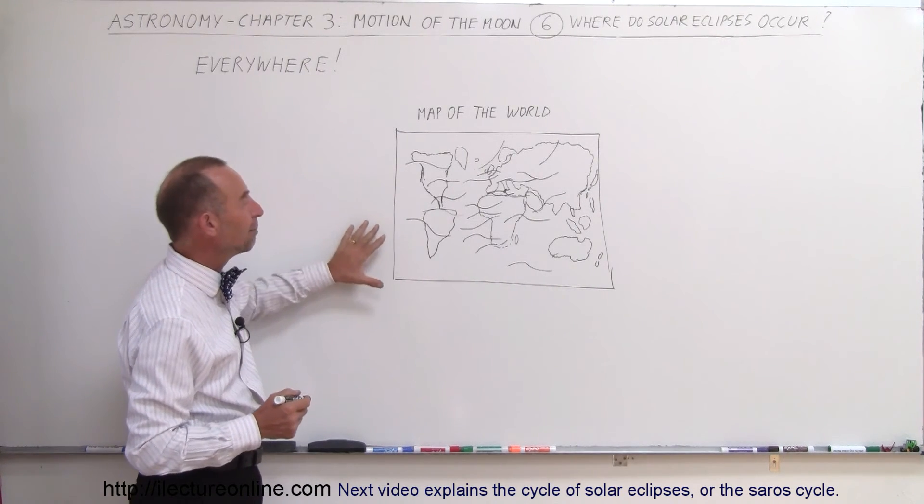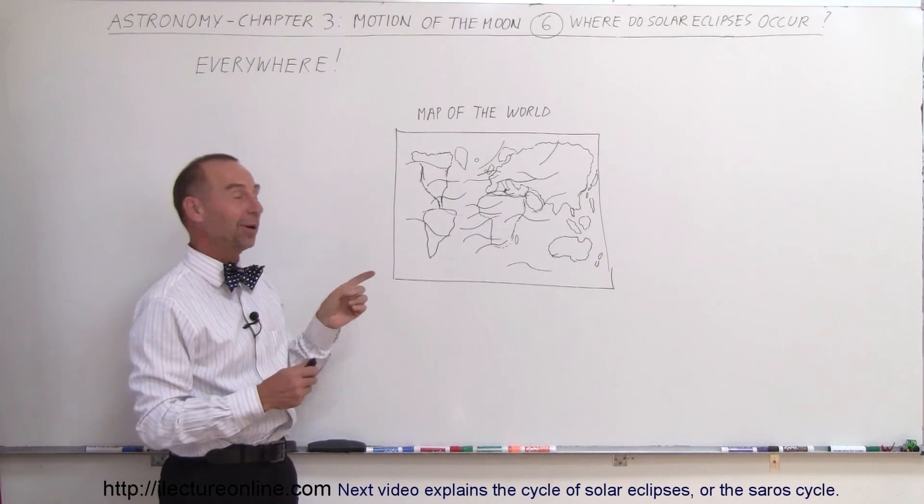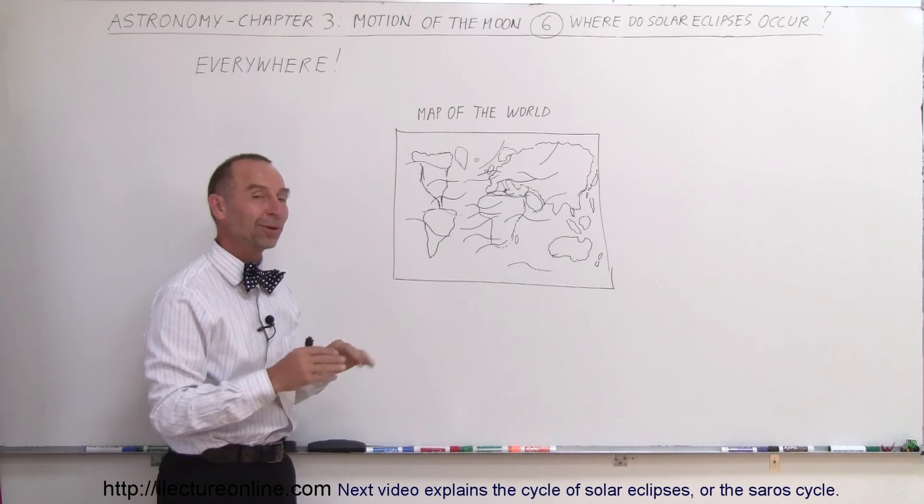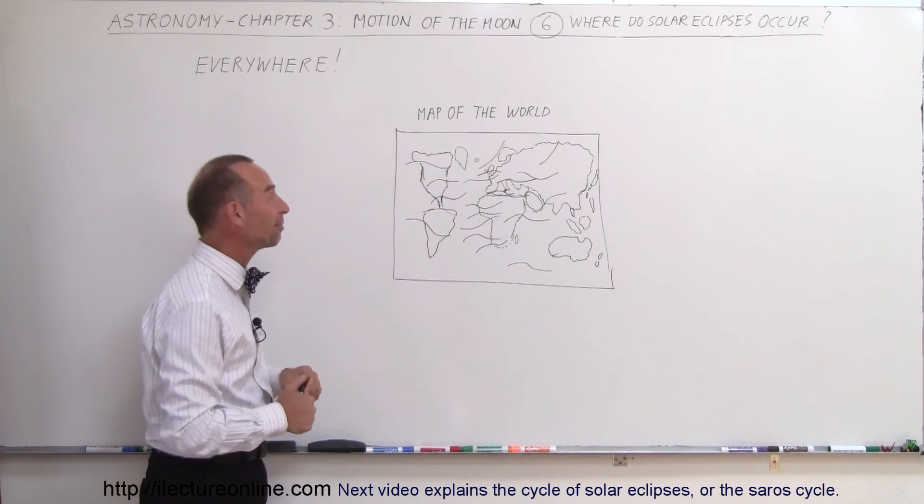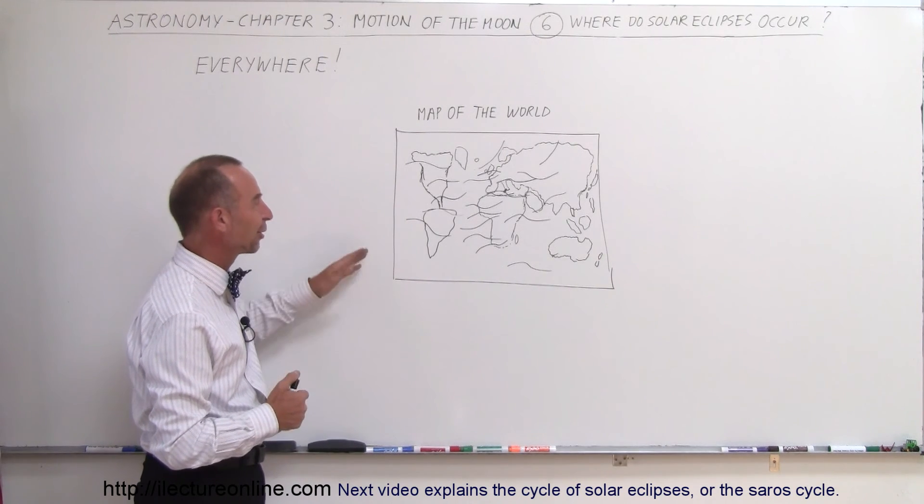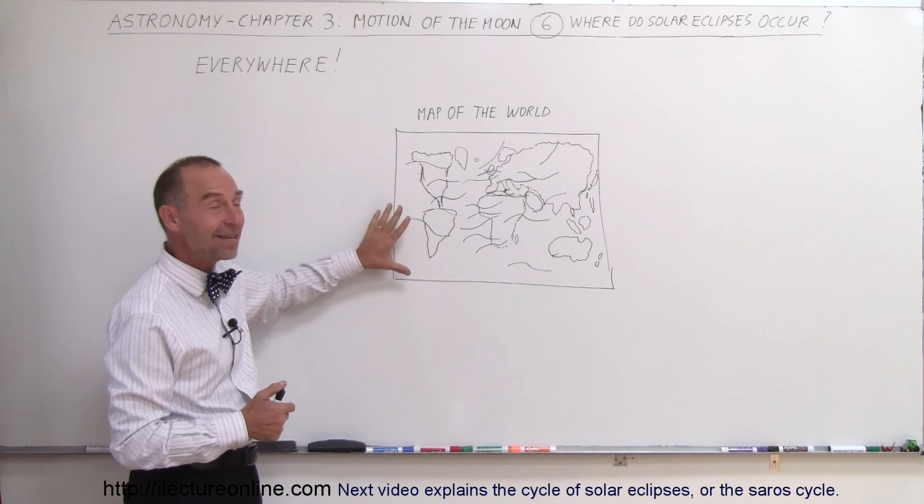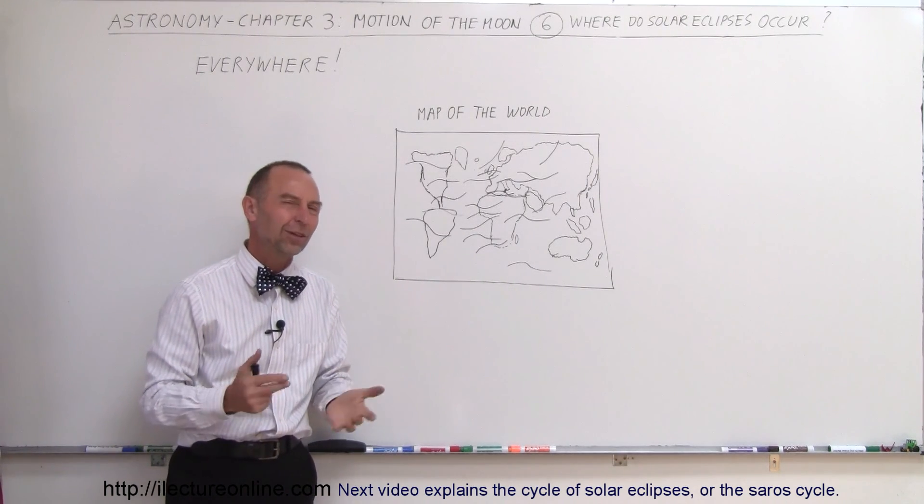So now, notice my map of the world is kind of crude, so excuse me for that. And if you live in a part of the world where I didn't quite draw that part of the world, I apologize. This is more or less done by memory, and I took a quick glance at my globe. But that's pretty well what the world looks like in a very crude fashion. But just get the idea that over time, just about any place in the world will eventually see a solar eclipse.